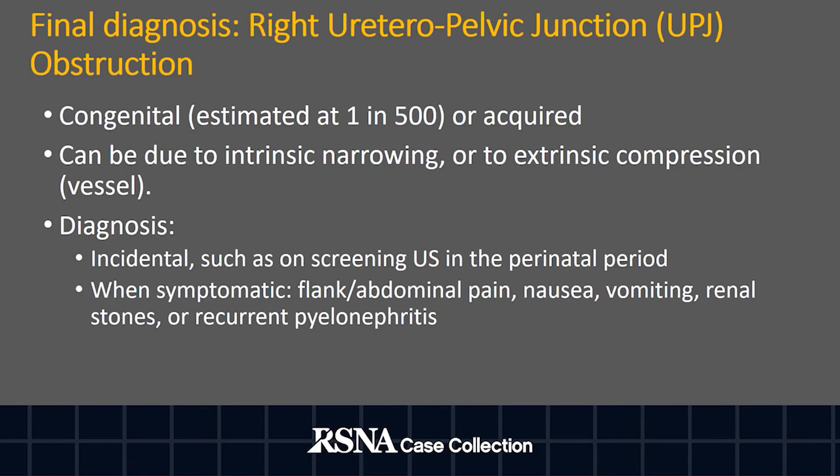The final diagnosis is right ureteropelvic junction obstruction. This could be congenital or acquired. It can be due to intrinsic narrowing or to extrinsic compression, typically due to a vessel crossing at the lower renal pole. The diagnosis can be made incidentally, for example on screening ultrasound in the perinatal period or in asymptomatic adults having imaging done for other indications.